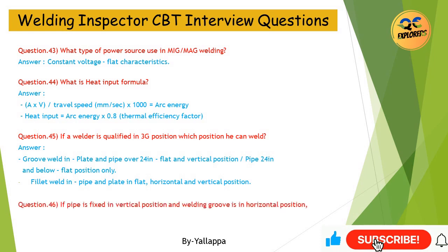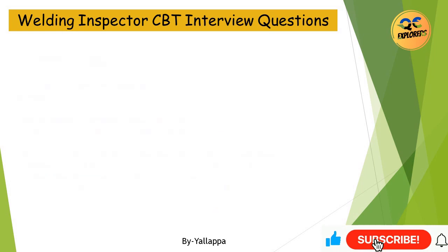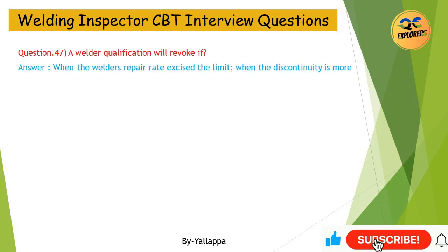Question 46: If a pipe is fixed in vertical position and the welding groove is in horizontal position, the pipe is in which position? Answer: 2G. Question 47: A welder's qualification will be revoked if? Answer: When the welder's repair rate exceeds the limit, or when there is a discontinuity of more than 6 months between the last welded joint and the present day.